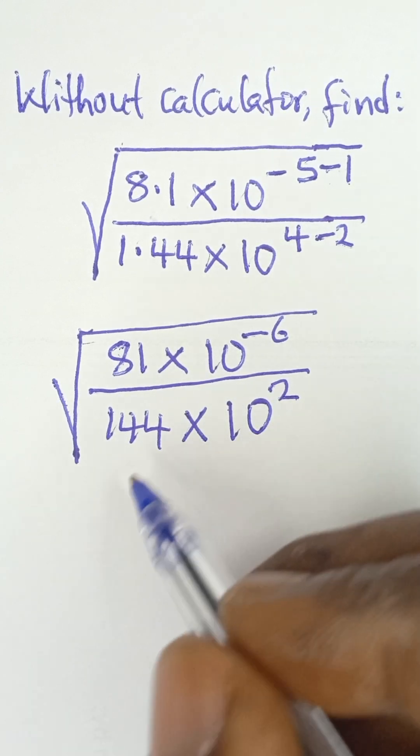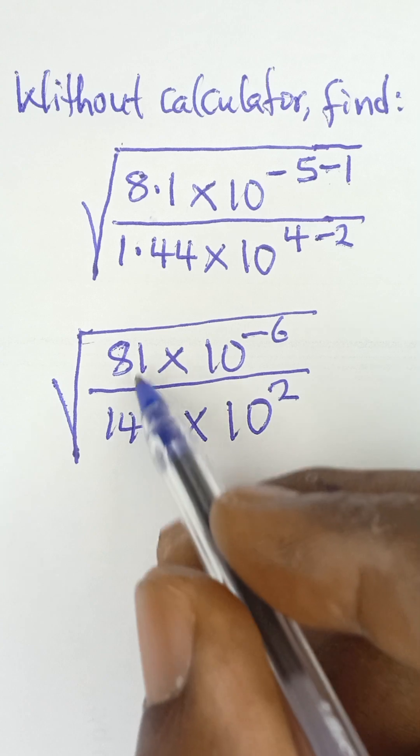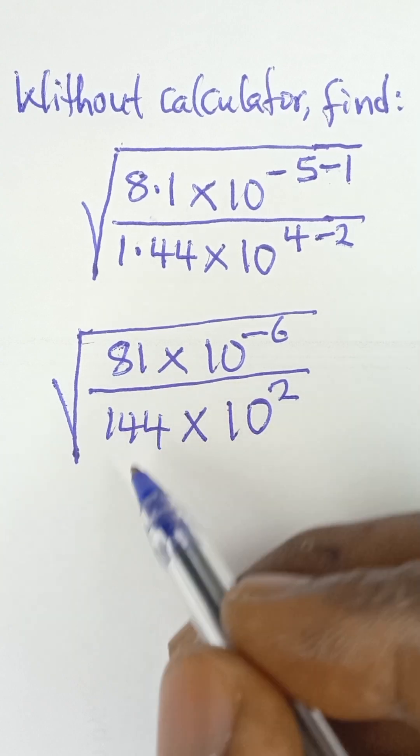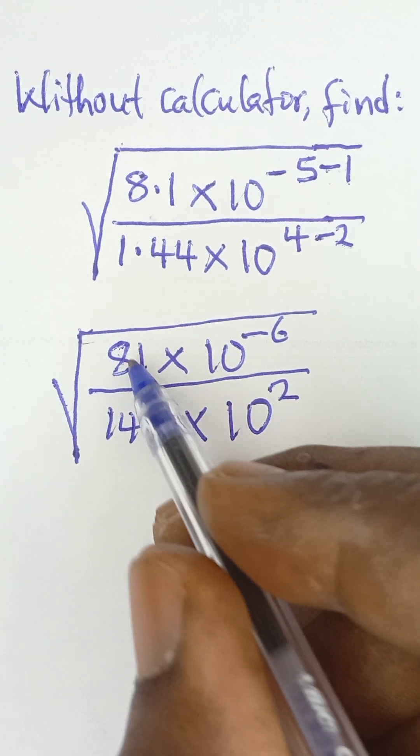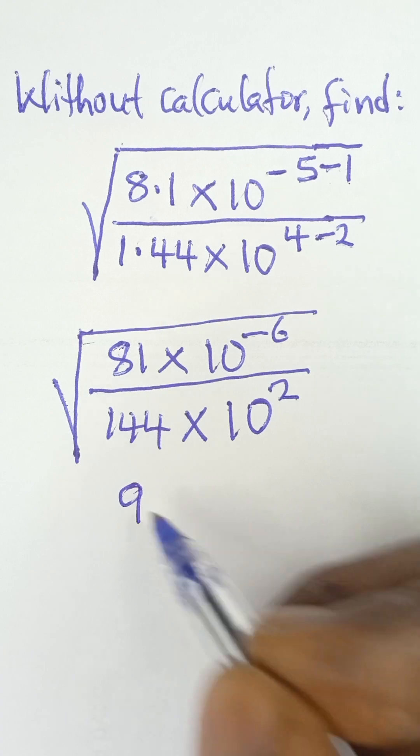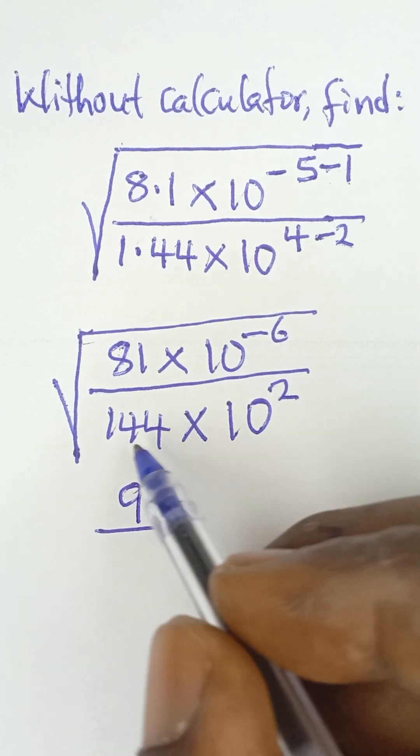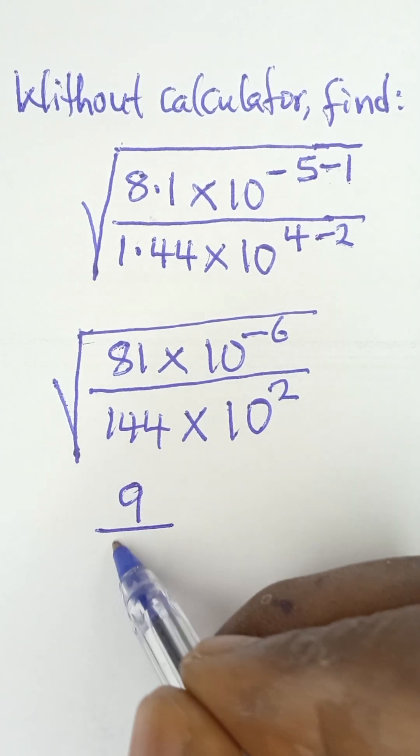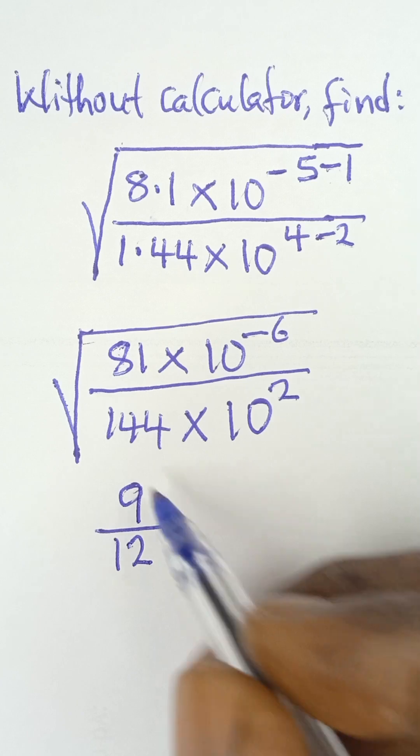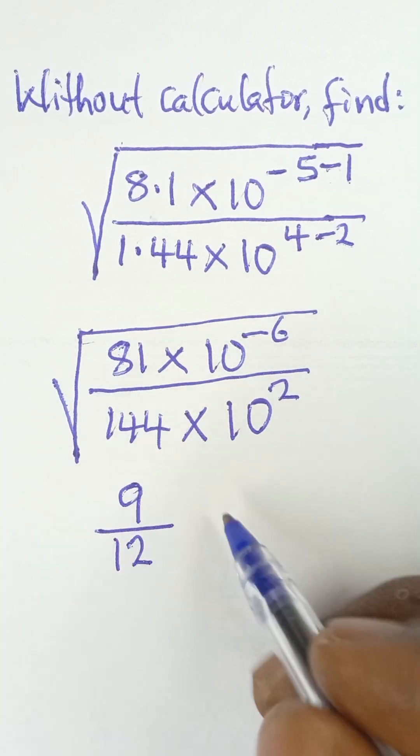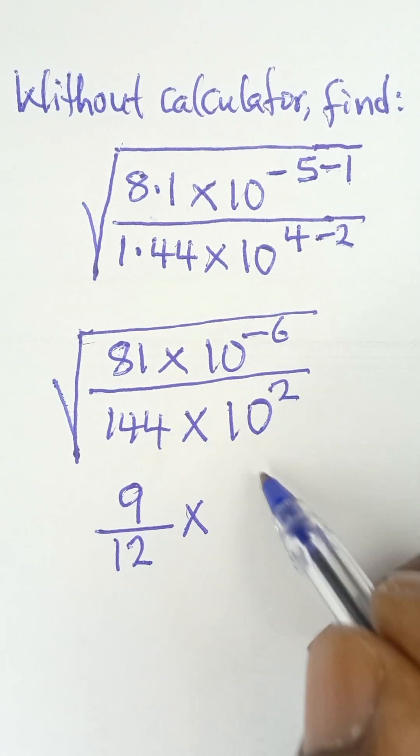So what I'm going to do now is to take the root of this. So the root of 81 is 9, all divided by the root of 144, which is 12. The square root of 144 is 12, the square root of 81 is 9.